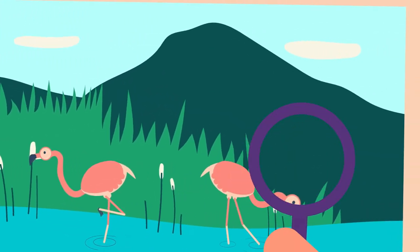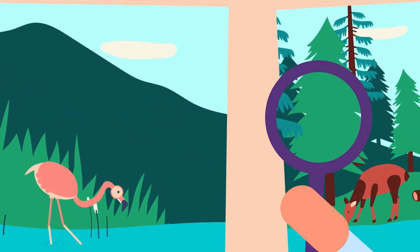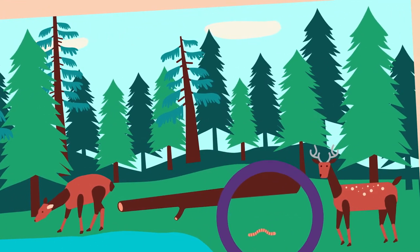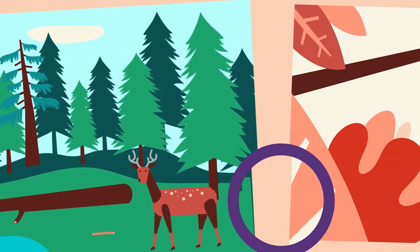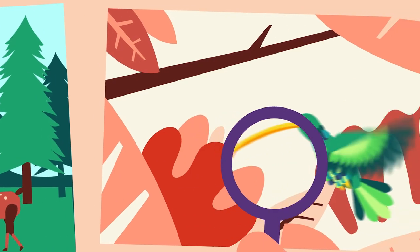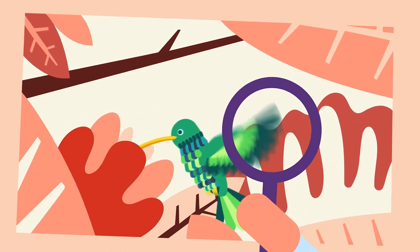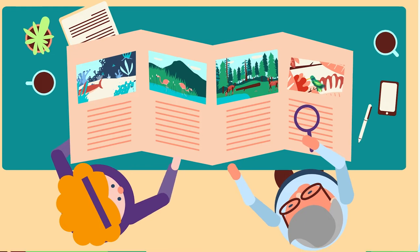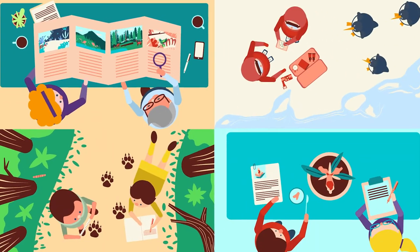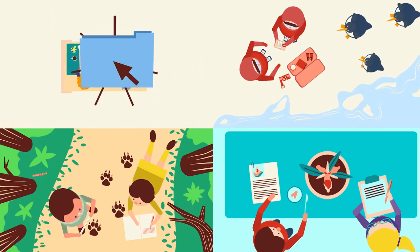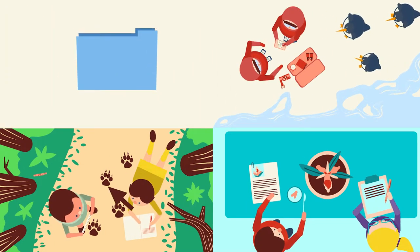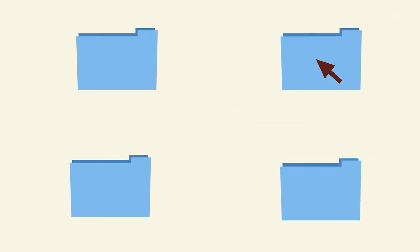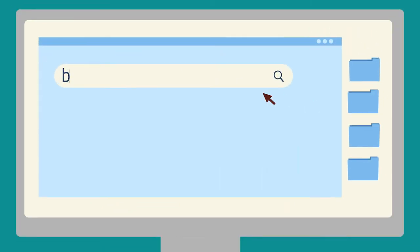For centuries, we have studied the great variety of species that inhabit the planet in order to understand how nature's dynamics work. Thousands of institutions and people around the world have invested in efforts to generate knowledge and make it visible through millions of publications that we can now simply find by typing the word biodiversity.